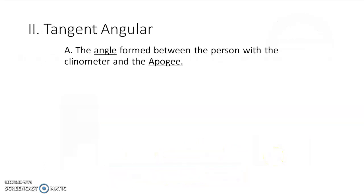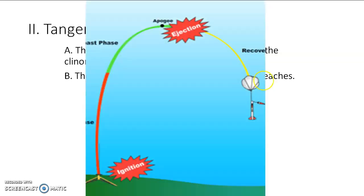The tangent angle is the other thing that we're going to need. Obviously, this angle is one thing we can get. And that's the angle formed between the person with a clinometer and the apogee of the rocket. Apogee is the highest point. So when my rocket gets launched, the engine stops right here. It coasts for a little while, and hopefully it reaches apogee.